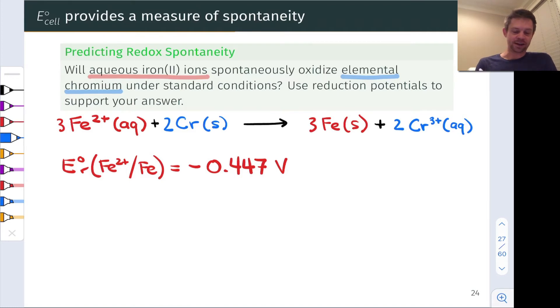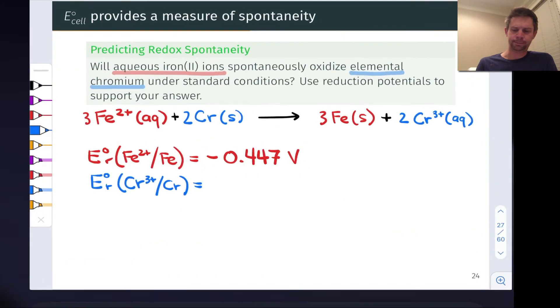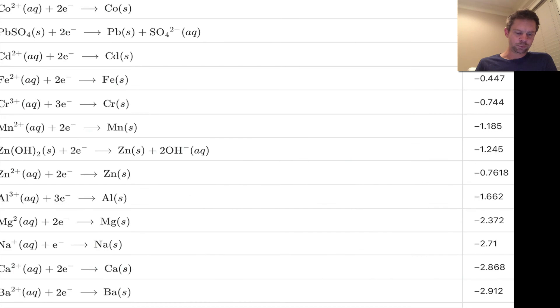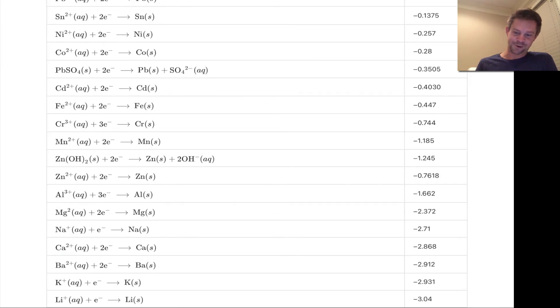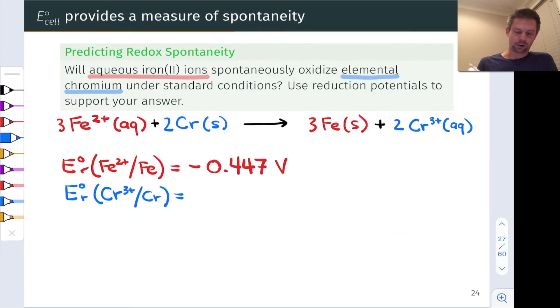And it all depends on the other reduction potential, which is the reduction potential of Cr³⁺, where the product is chromium metal. And that was quite a bit more negative, down at a potential of -0.744 volts.